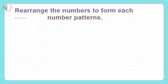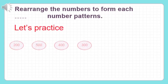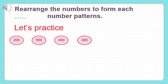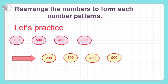Rearrange the numbers to form each number pattern: two hundred, five hundred, four hundred, and three hundred. Let's try to do it in ascending order, counting up. From the smallest number, which is two hundred, next is three hundred, next is four hundred, and the last number is five hundred. As you see, we used one hundred in counting up for this number pattern.